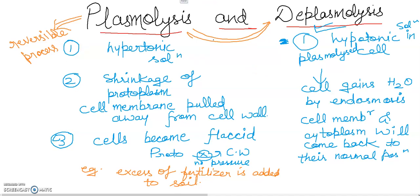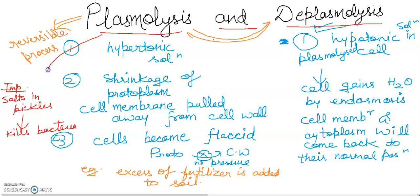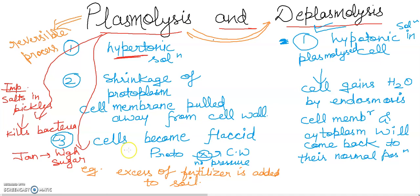The importance of plasmolysis is that it kills bacteria. Plasmolysis process will kill the bacteria. That is why salt is used to create a hypertonic medium. In the same way, high sugar solutions are used — for example in jam and jellies. The point is that plasmolysis will kill the germs and bacteria in the medium.